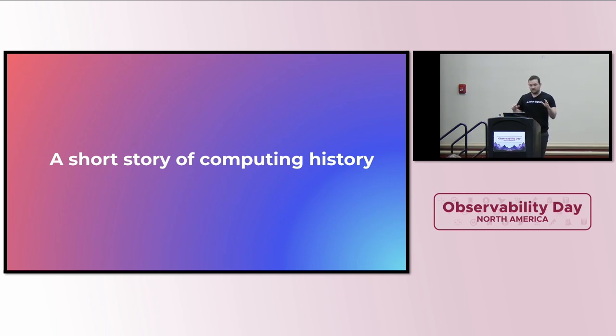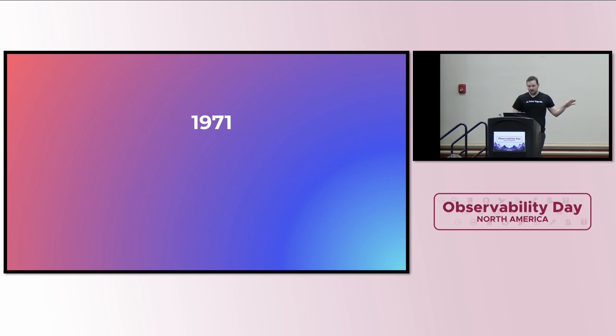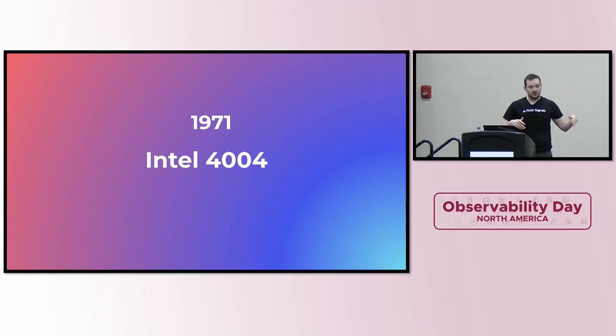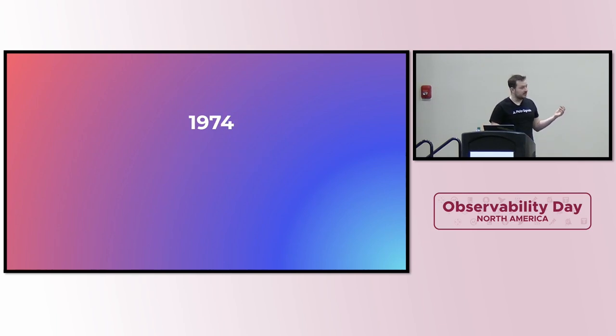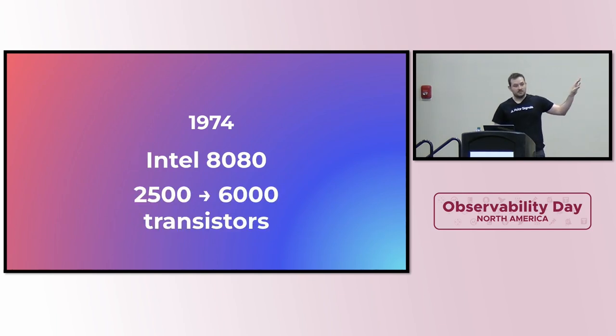To start, I want to start with a really quick short story of computing history and why now, in particular, it's a very important time for profiling. The year is 1971 and Intel released this chip that was basically the first chip that you could buy commercially. This was a huge deal. Then, in 1974, Intel released this infamous AT80 chip. Just from the original chip to this chip, the number of transistors in the CPU more than doubled.